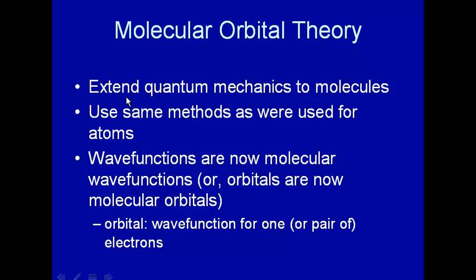Since molecules usually have more than one electron, we're primarily going to talk about the variation method to solve the Schrodinger equation, not so much the perturbation method, although we will mention that a little later. But for now, let's talk about molecular orbital theory.